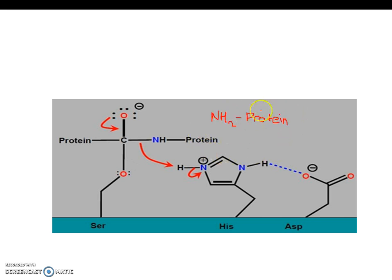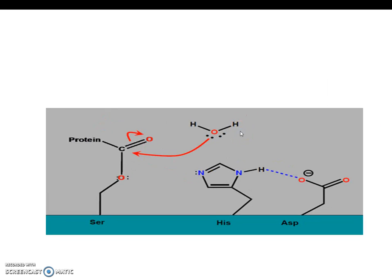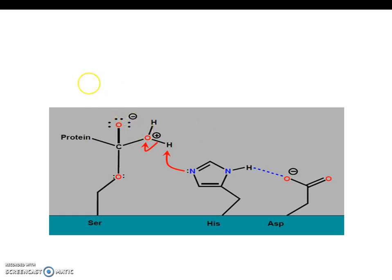This is the first product. Next, a water molecule comes in. One of the lone pairs on the oxygen of the water molecule attacks this carbonyl group, and the electrons in this double bond get shifted onto the oxygen. This oxygen would then have a negative one formal charge.